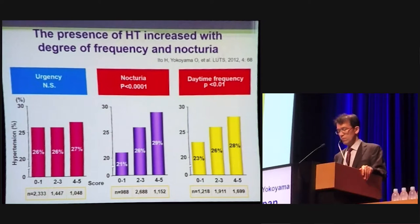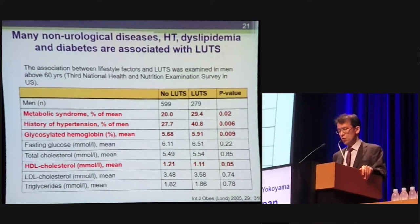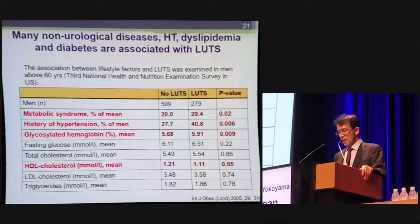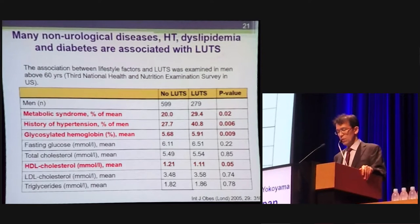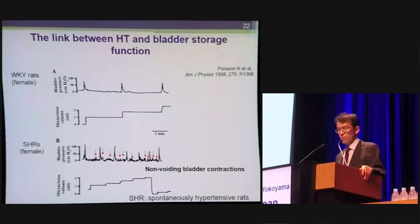The presence of DM also increased with the degree of nocturia. This slide shows the association between lifestyle factors and LUTS in men above 60 years old in the US. A history of hypertension, glycated hemoglobin, and HDL cholesterol levels appear to be associated with LUTS. Animal studies support a link between hypertension and bladder storage function.